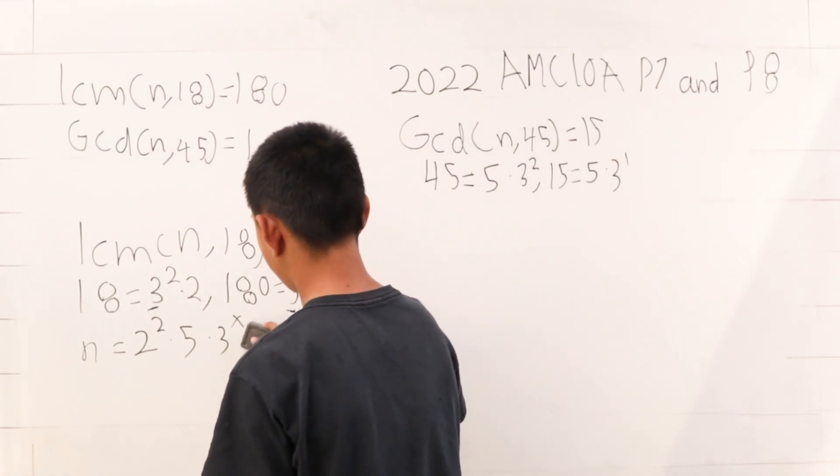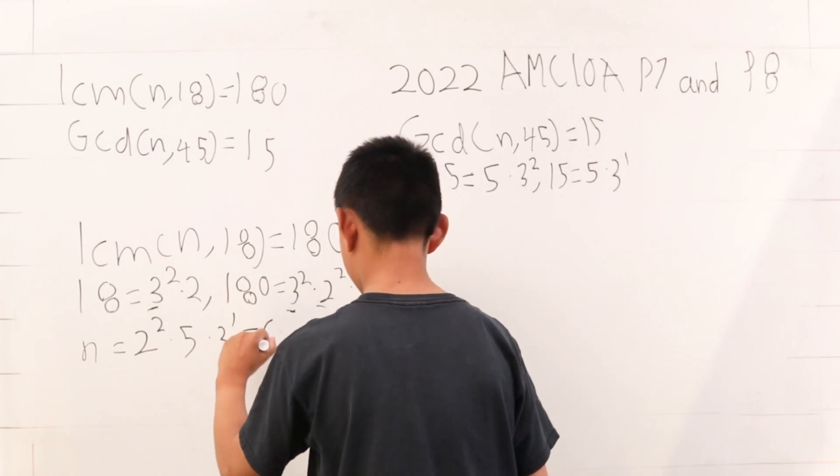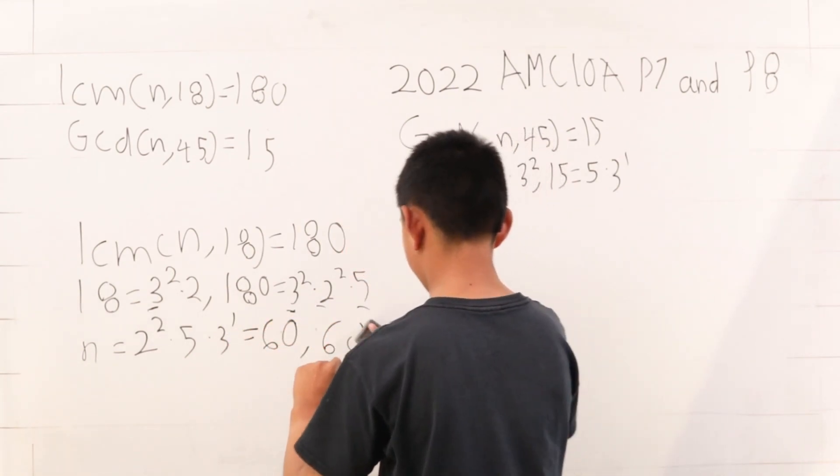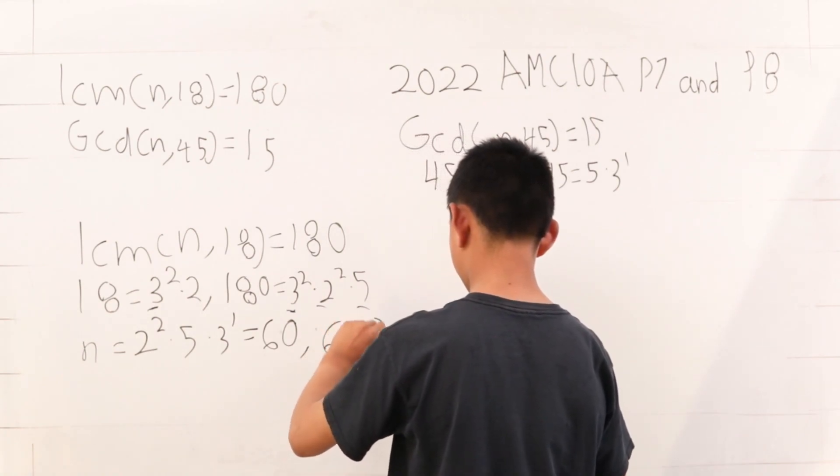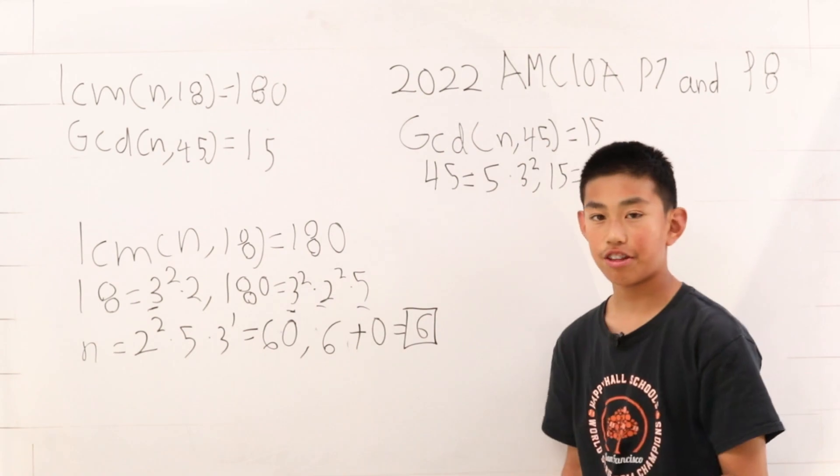So therefore, it's really 3 to the 1. When you multiply this out, you get 60. So the sum of the digits is 60, well no, 6 plus 0, which is 6. So we have our answer.